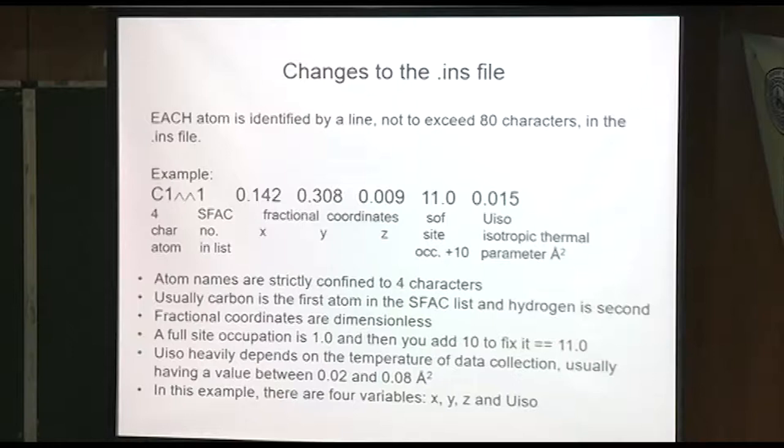This site occupation factor 11 looks weird. But what it is actually is the occupation is one if it's fully occupied. And then you add 10 to that to make it fixed. So in other words, this is not a refined parameter, it's fixed. The things that are variables are X, Y, and Z, and U. So in describing this atom, there are four variables in the least squares refinement procedure.